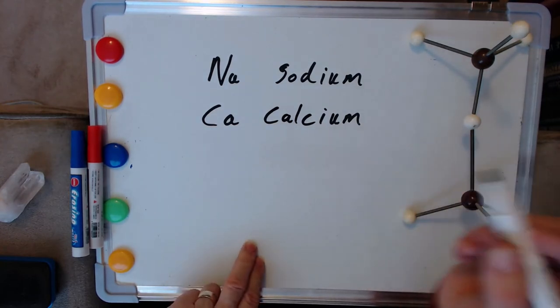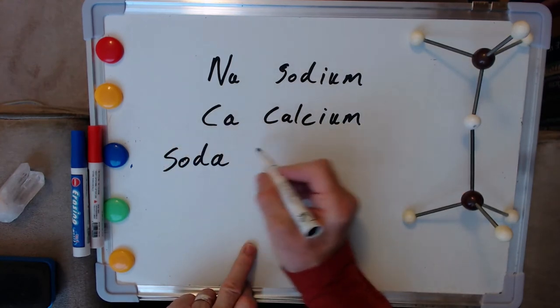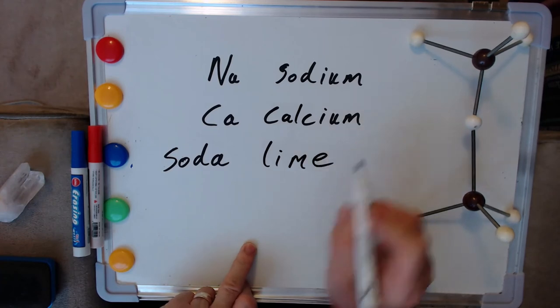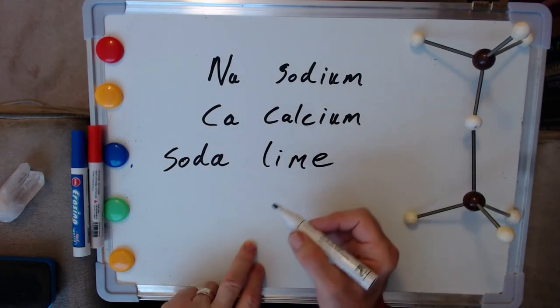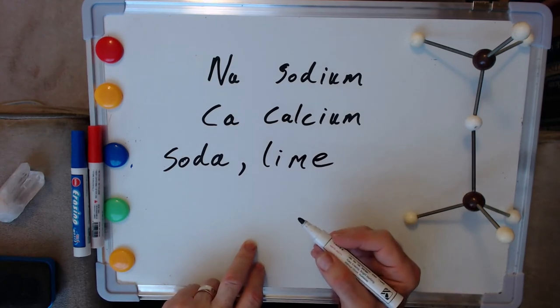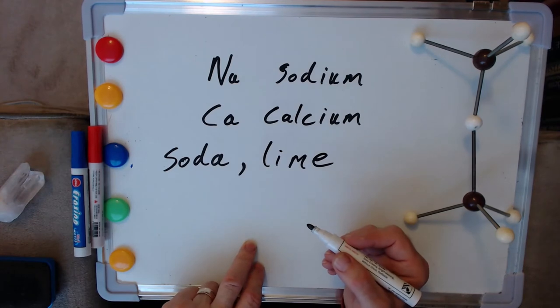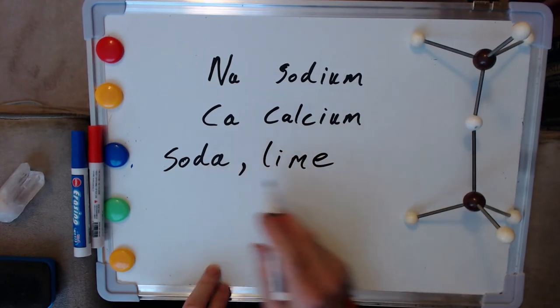And these two things came from ingredients in nature that we would know of as soda and lime. So seaweed, chalk, all sorts of stuff could go into providing these ingredients.